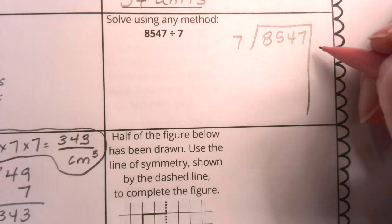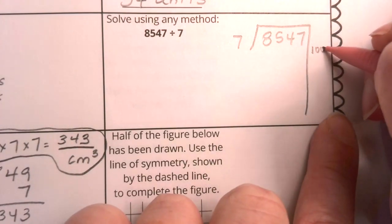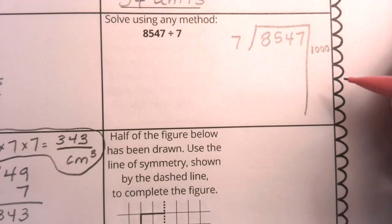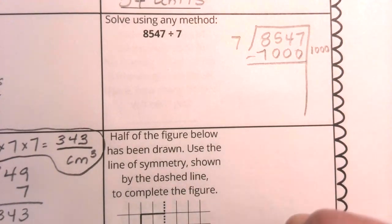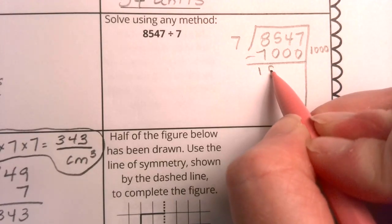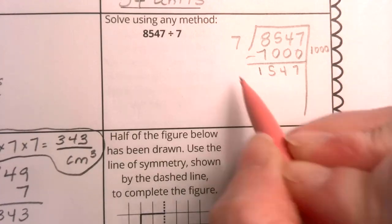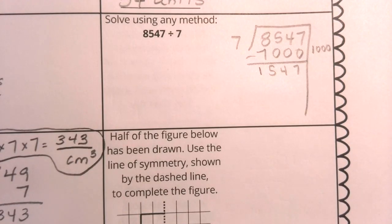Here I have 8,547 that's going to be broken up into 7 groups. So how much can I start with dividing into the groups? Let's start with 1,000 groups of 7. 1,000 groups of 7 is going to use up 7,000 of that. That is a very good first take, because look how much of that number we have already used up.